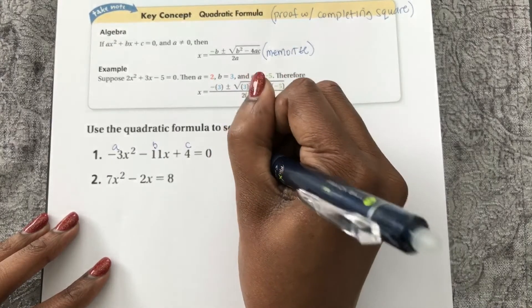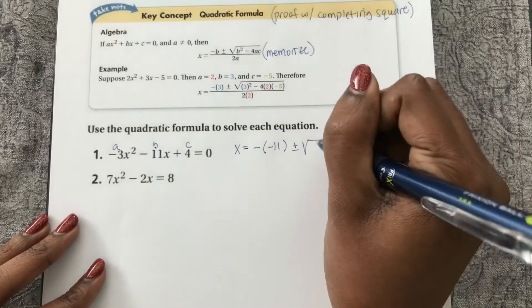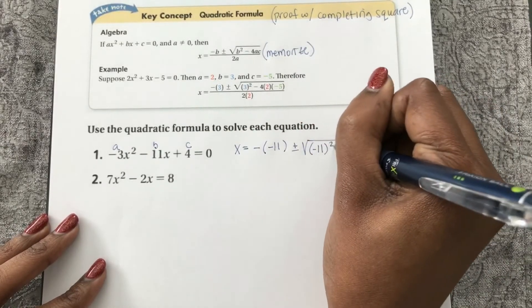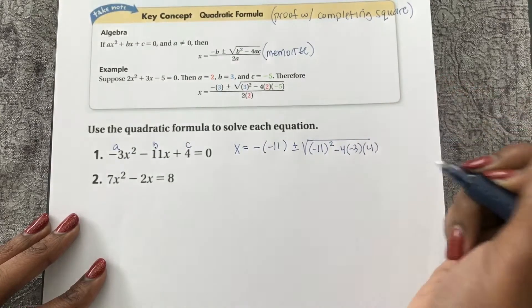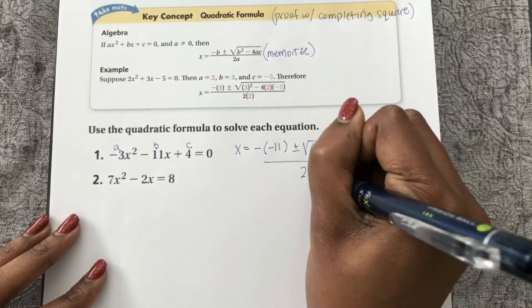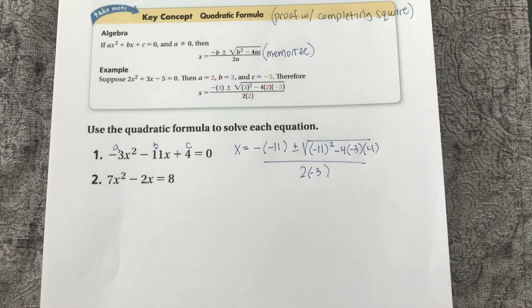So x equals negative b plus or minus the square root of b squared minus 4ac all over 2a. In that first step, all I did was plug in my a, b, and c into my formula.